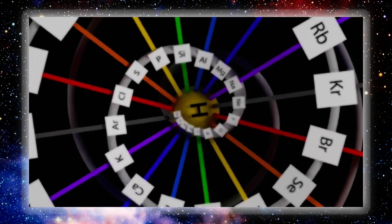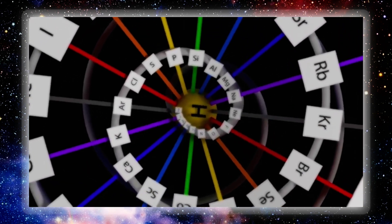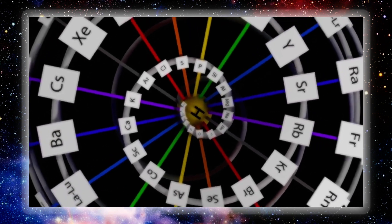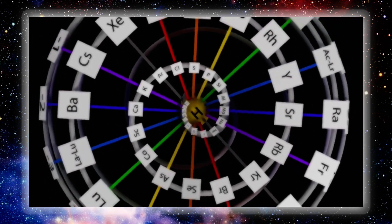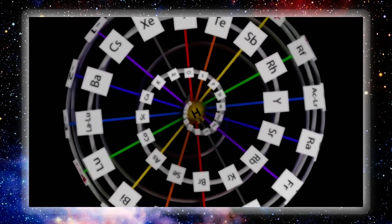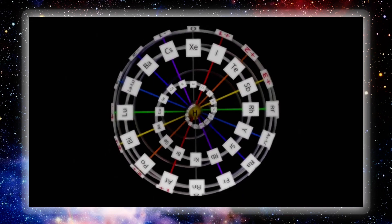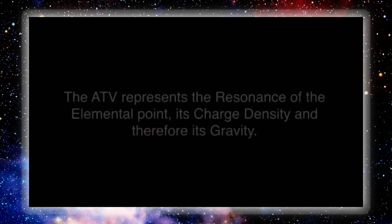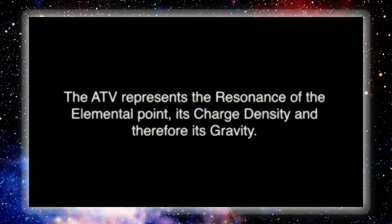The area-time-volume, or ATV, is the product of the ratios between the 3-4-5 triangle. This allows us to visualize a proportional concept equivalent to a parable — not the exact truth, but a story enabling us to understand the underlying principle of the familial and group relationships between zero matter, light, matter, sound, crystal form, positive and negative charge, paramagnetic disposition, and form. The ATV represents the resonance of the elemental point, its charge density, and therefore its gravity.